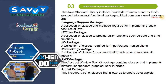Here I am explaining a few of the packages available in Java. The language support package is a collection of classes and methods required for implementing basic features of Java. The utilities package provides utility functions such as date and time. The input/output package contains classes for input/output manipulations. The networking package contains classes for communicating with other computers via a network. The AWT package — Abstract Window Toolkit — contains classes that implement a platform-independent graphical user interface. The applet package includes classes that allow us to create Java applets.